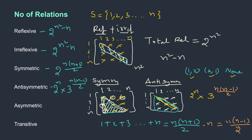Asymmetric is similar but diagonal elements are not supposed to be picked up, so that 2^n term is removed. The result is 3 to the power of n(n-1)/2. Now coming to transitive — this is pretty complicated. It's a hard problem and there is no specific way of calculating it, so we can just ignore this.